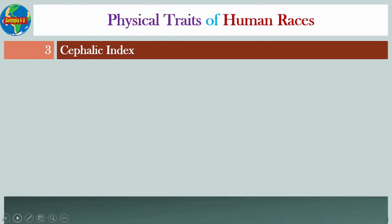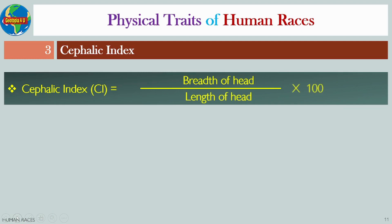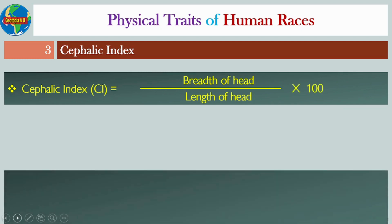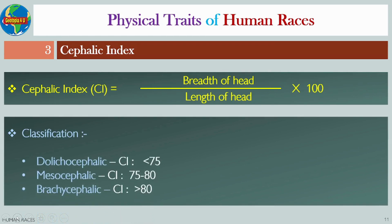Number three: Cephalic index. Cephalic index can be defined as the ratio between the breadth of the head to the length of the head. There are three types of cephalic index: number one, dolichocephalic; number two, mesocephalic; and number three, brachycephalic.